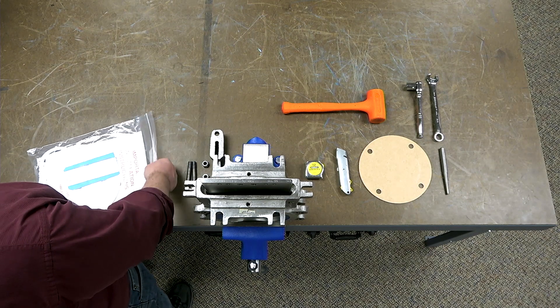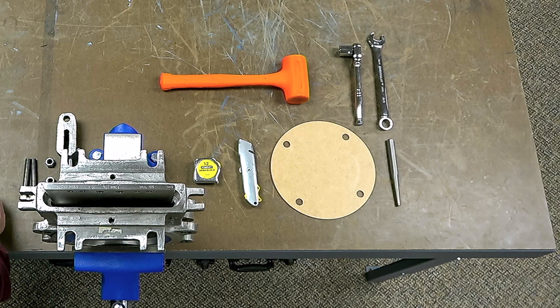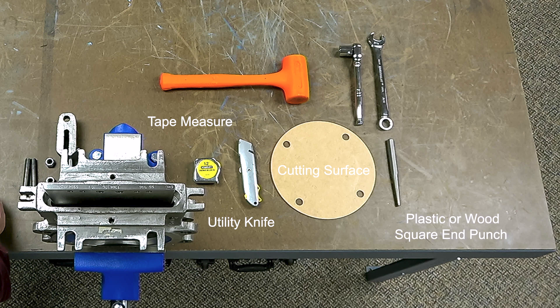Tools for repacking a knife gate valve include a tape measure, utility knife, cutting surface, plastic or wood square end punch, rubber mallet, and wrenches.